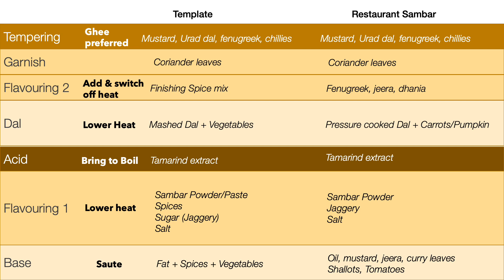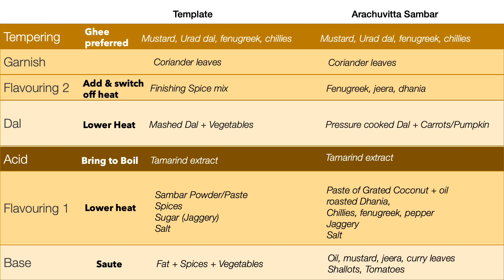The last example is arachivitta sambar — a similar process: oil, mustard, cumin, curry leaves, and you may or may not add shallots or tomatoes. You make a paste of grated coconut and oil-roasted coriander seeds, chilies, fenugreek, and pepper, then add it along with jaggery and salt. Add your tamarind extract, then pressure-cooked dal, and optionally the finishing fenugreek-cumin-coriander spice powder. In some cases arachivitta sambar is so strongly flavored you don't need a finishing powder — you can go straight to tempering.